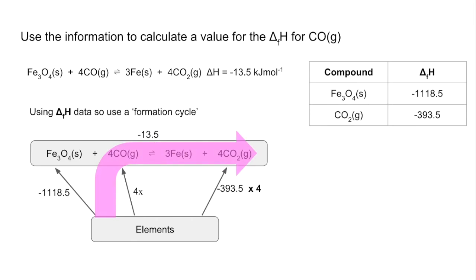And the other root going from elements to three moles of iron and four moles of carbon dioxide is that root there. So literally just the minus 393.5 times 4.